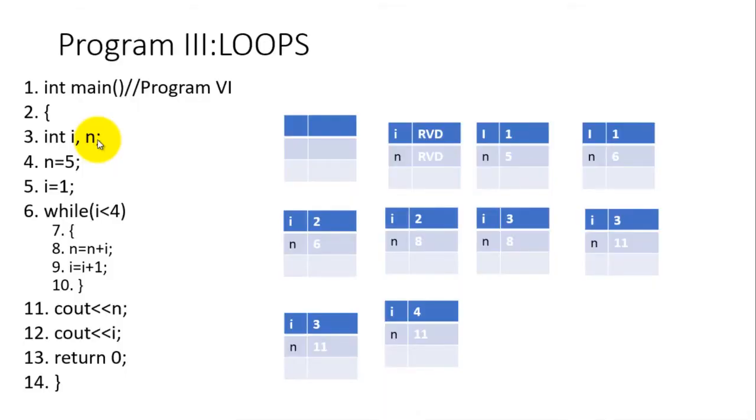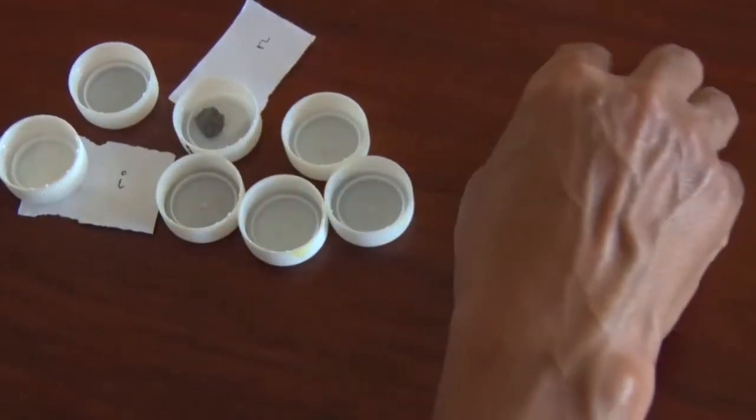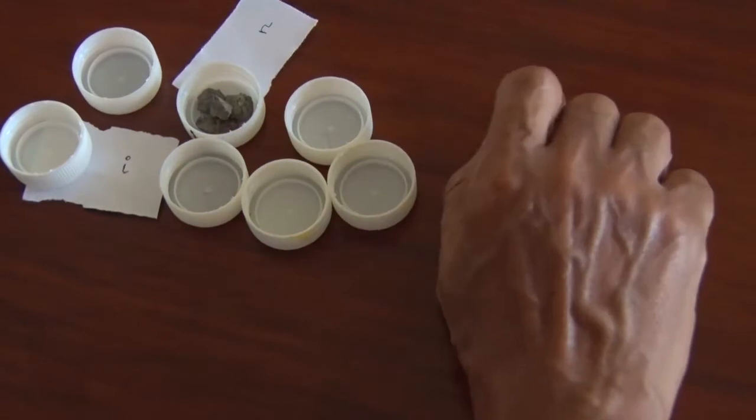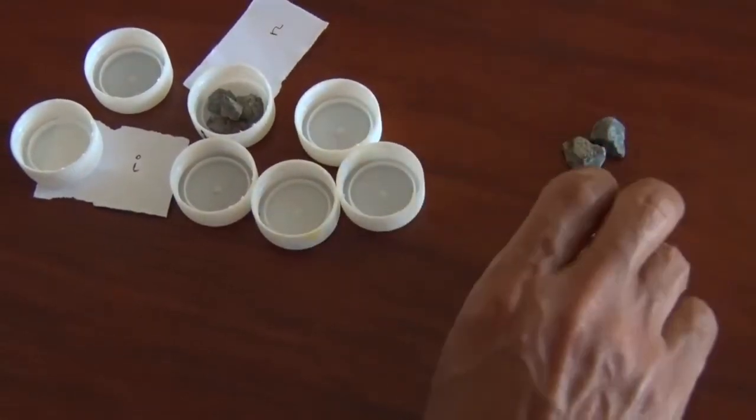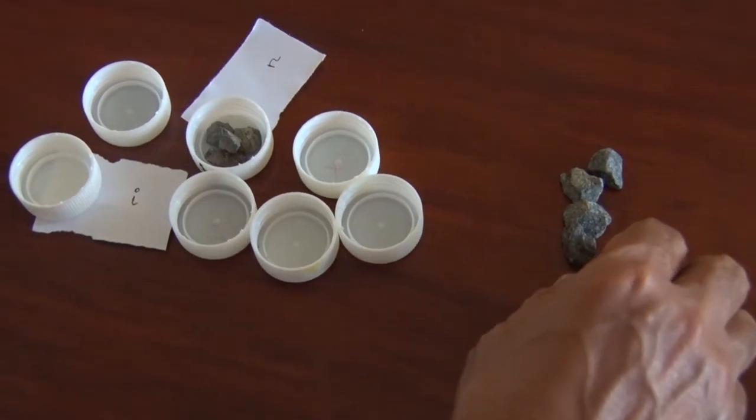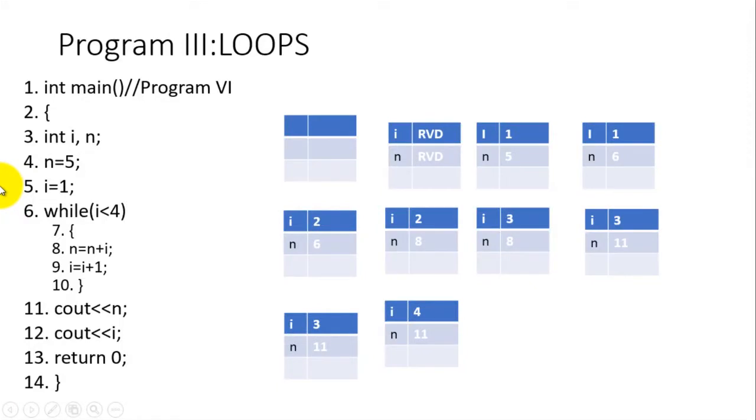What follows next is line number 4, where n equals 5. The quantity of 5 is entered into room n, so you have 1, 2, 3, 4, and 5 now in room n. Line number 5, i equals 1. Now i has been assigned the value of 1.